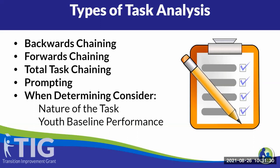Next would be forward chaining, where steps are identified in a task analysis and taught in their naturally occurring order. Initially, reinforcement is delivered when the youth accurately completes the first step. The next time the skill is taught, the second step becomes the one that is reinforced. The next type is total task chaining, a variation of forward chaining in which the learner receives instruction and reinforcement on each step of the task each time it is taught, sometimes referred to as concurrent training.